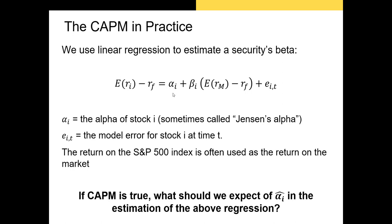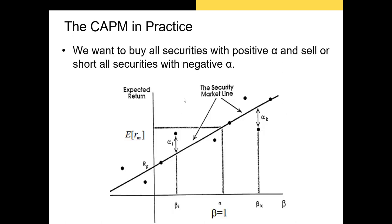If the CAPM is a perfect model, then this alpha will essentially be zero, or as you'll see, it'll be right around zero.